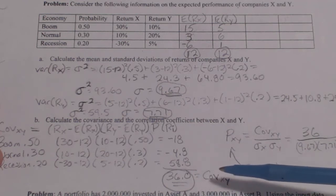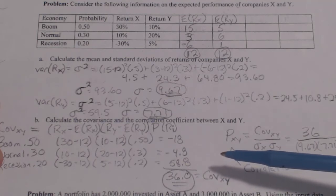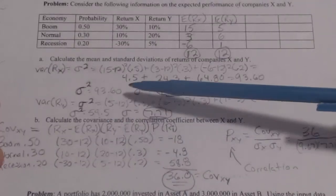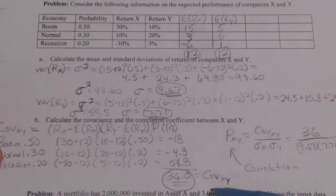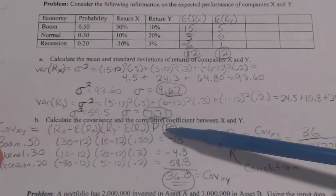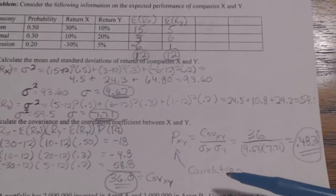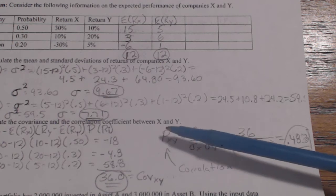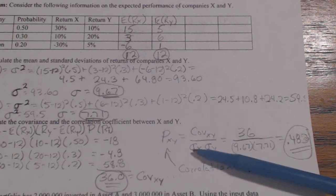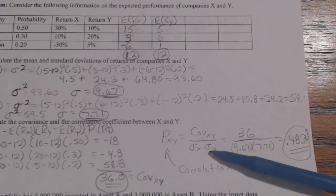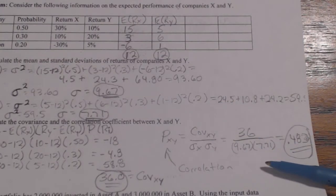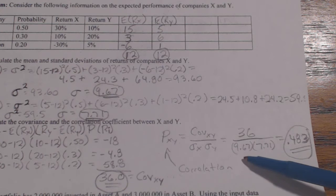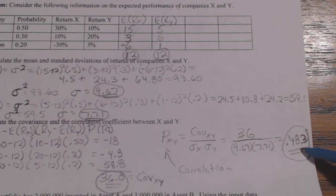Note: these are my own calculations — if your notes differ from what your professor gave you, his notes are right. I haven't seen the lecture, so these are the correct formulas but verify the math. For the correlation coefficient: correlation of X and Y equals the covariance of X and Y divided by the standard deviation of X times the standard deviation of Y. So 36 divided by (9.67 times 7.71) gives a correlation of 0.483.